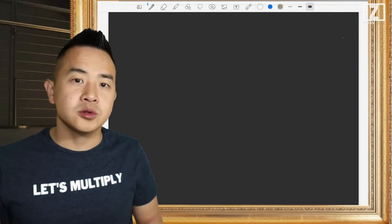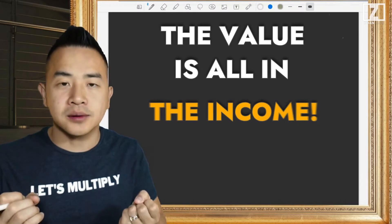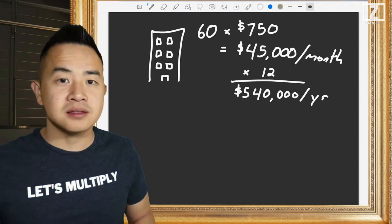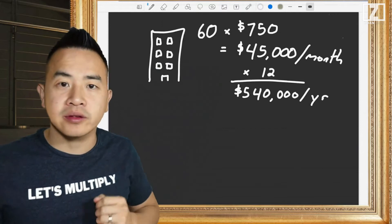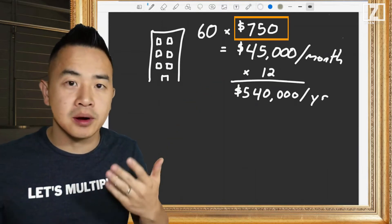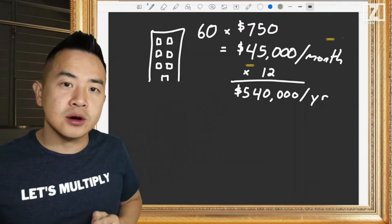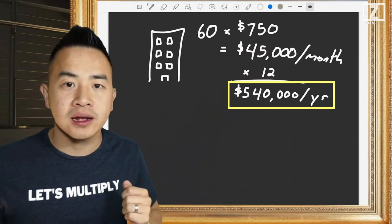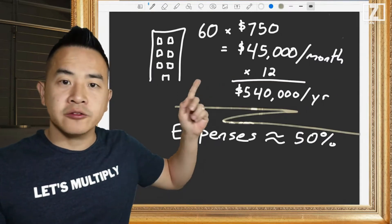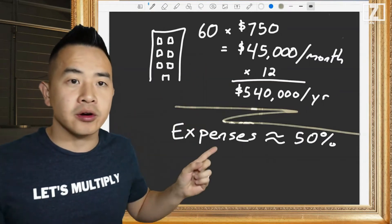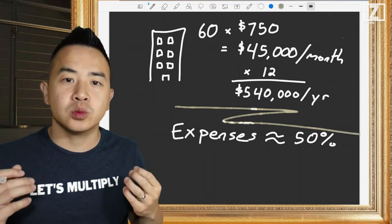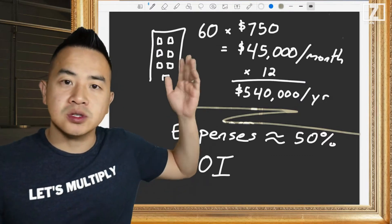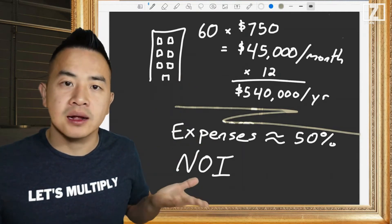When it comes to apartment buildings, the value is all in the income that the property produces — the income is what's important. Let's take this apartment building as an example: it's a 60-unit building currently renting for $750 per month per unit, so per month we are bringing in $45,000 and over the year we're bringing in $540,000. The income from rent is just part of the story; the other part is expenses, because what we're trying to do is come up with an NOI — net operating income. You take your income, minus your expenses, and that is your NOI.